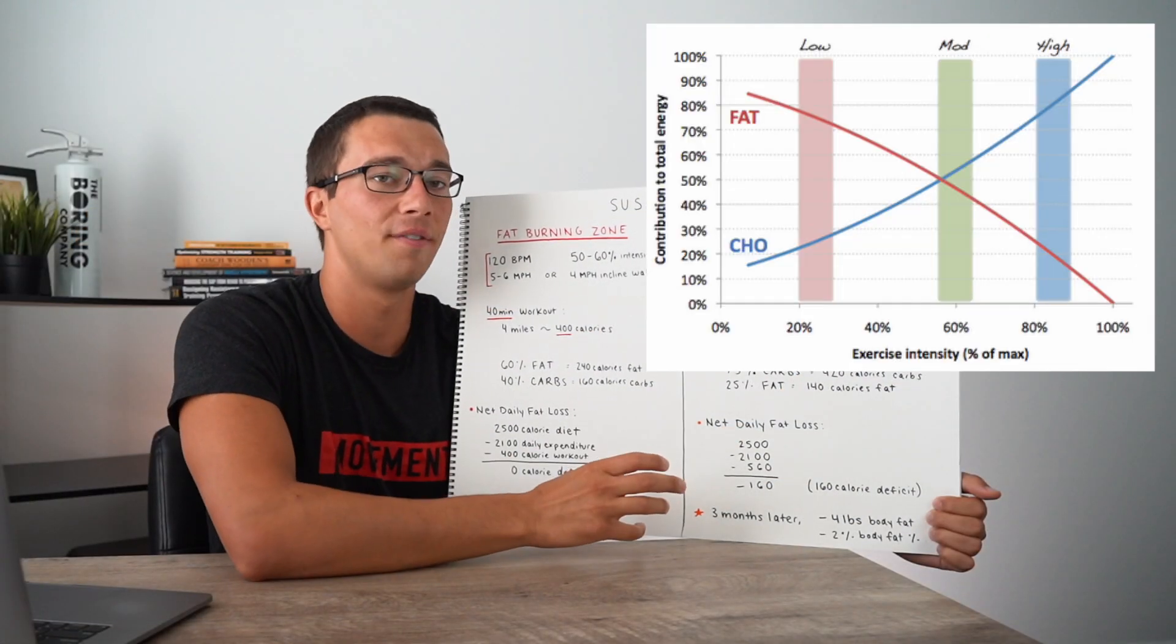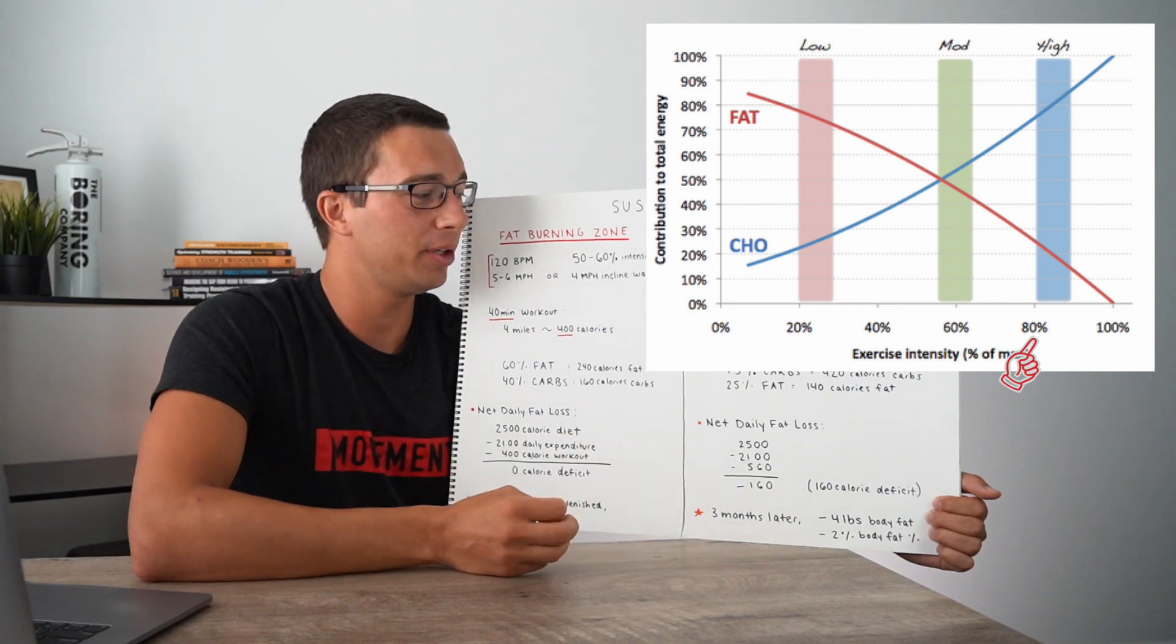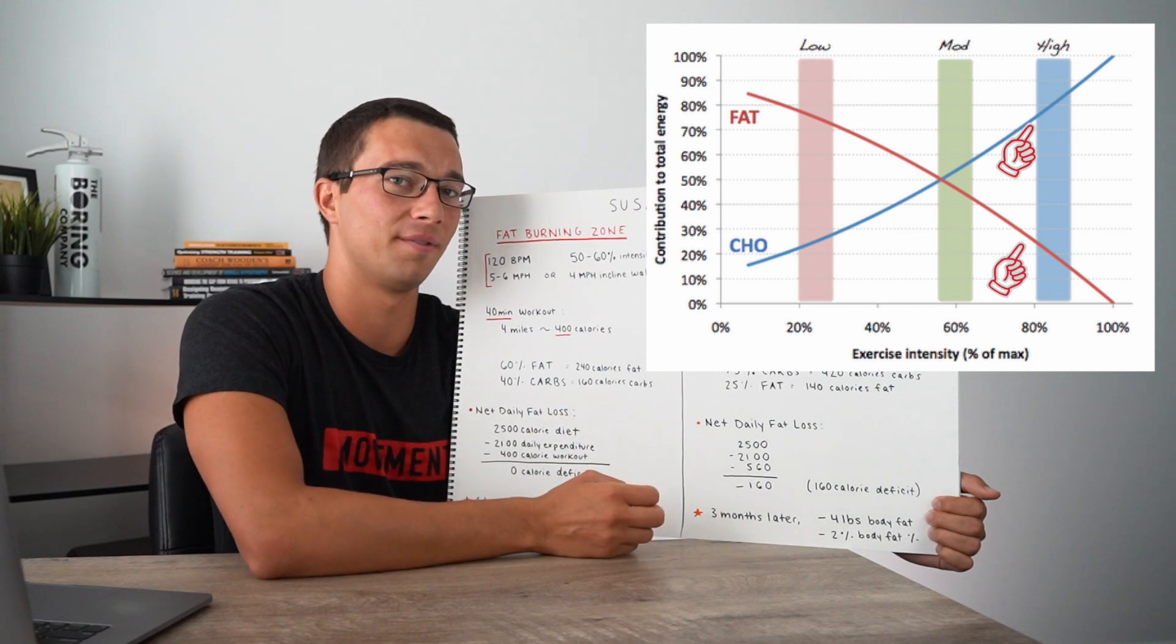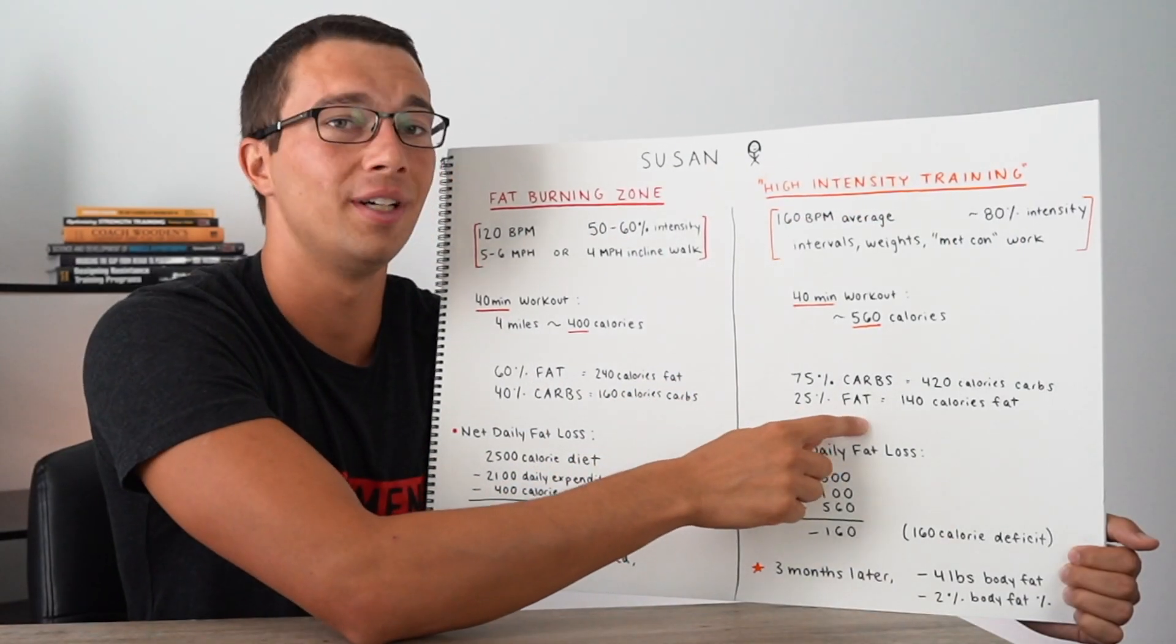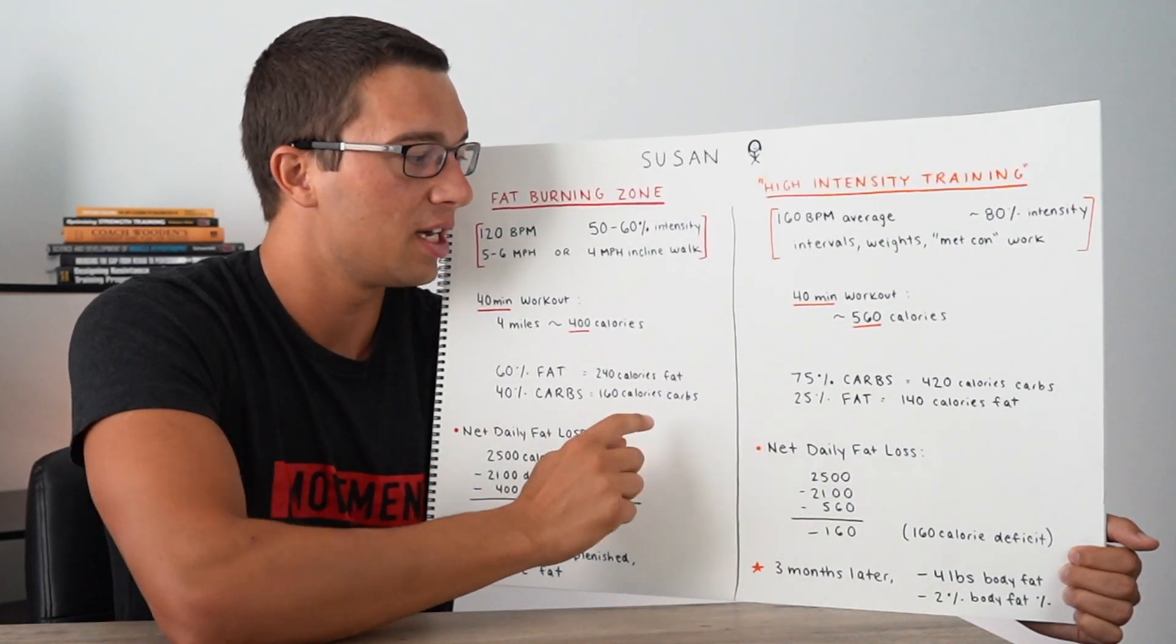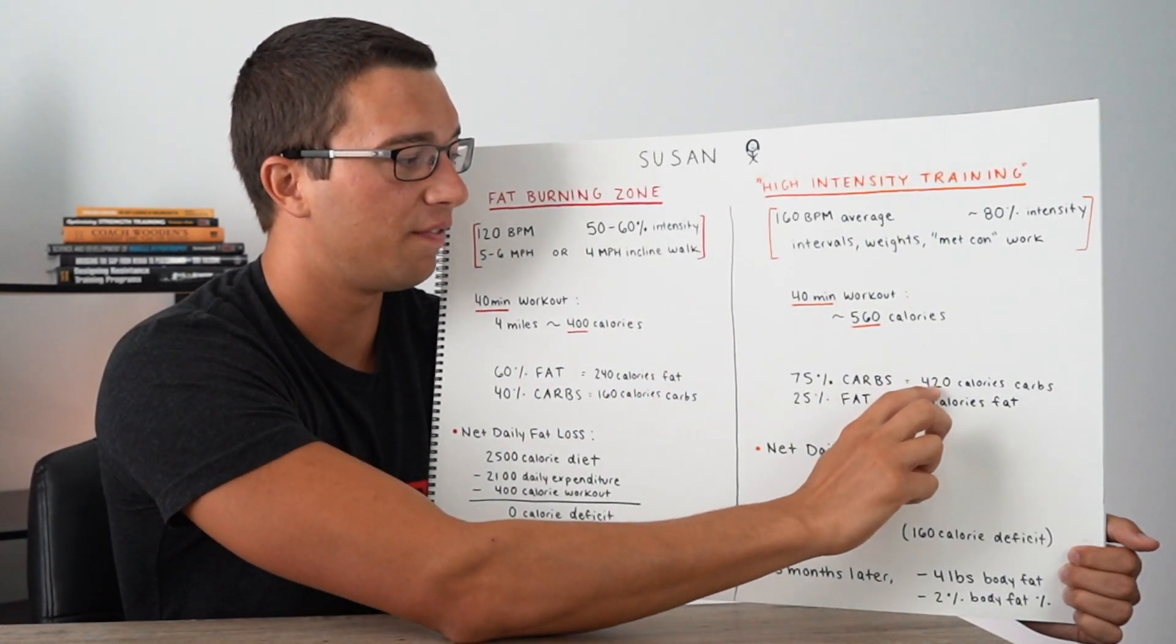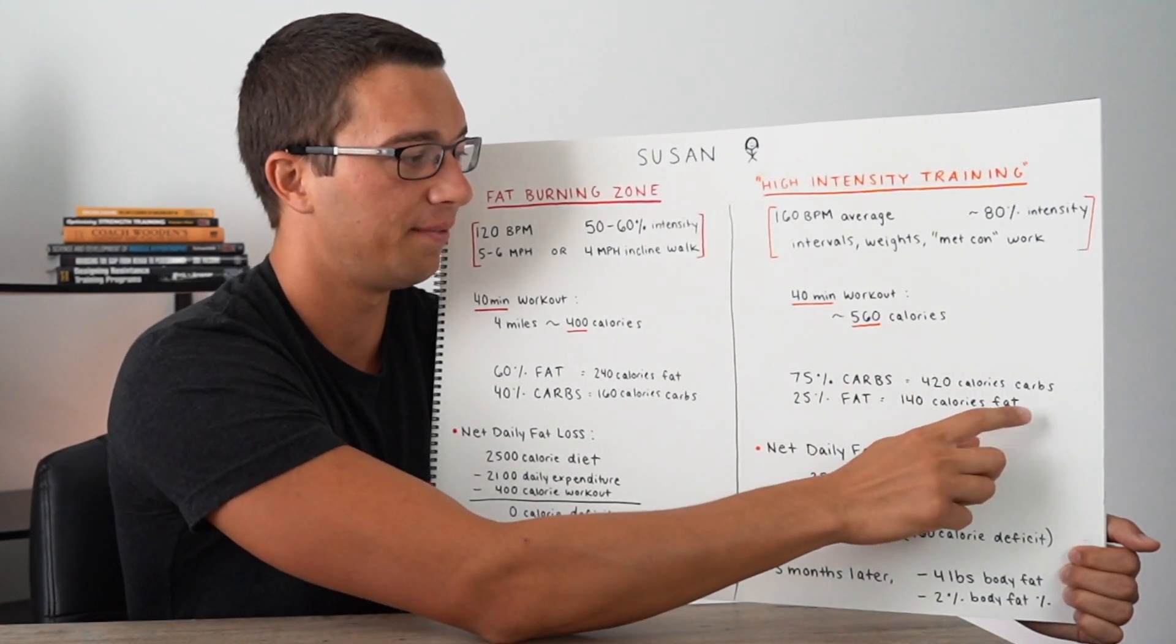All right, so going back to our graph, we can see that at about an 80% intensity, she's probably burning around 75% of her calories from carbohydrate and around 25% from fat. So a significantly lower percentage of fat oxidation and a significantly higher percentage of carbohydrate utilization compared to this fat burning zone workout. So in that workout, she actually burned around 420 calories from carbohydrate and 140 calories from fat.